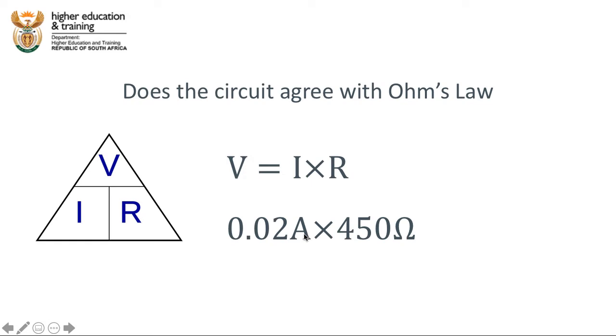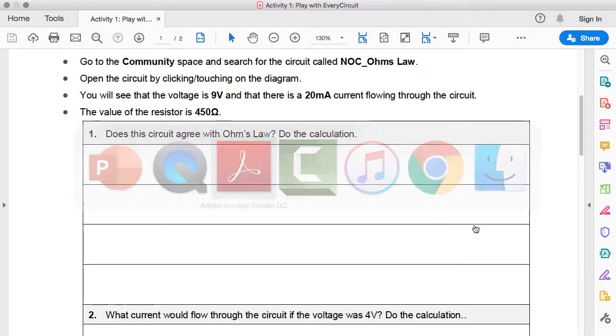In our case we have a current of 0.2 amps, remember we need to change it into amps. This only works if all of the units are standard units. We need to change that 20 milliamps into 0.02 amps. The resistance is in ohms already, so this equation becomes 0.02 amps times 450 ohms, and if you do that on a calculator you get the answer of 9 volts. So yes, this circuit does agree with Ohm's Law.